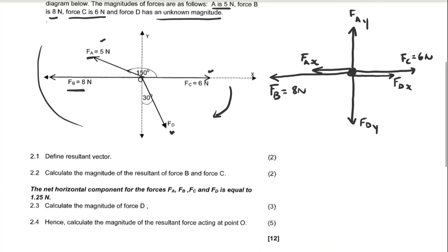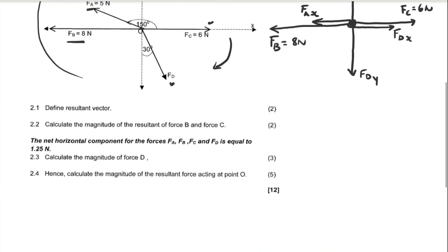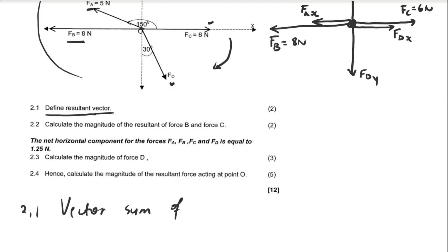Now we can answer question 2.1: Define the term resultant vector. The resultant vector is the vector sum of two or more vectors.